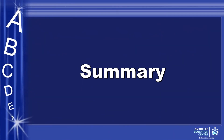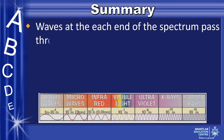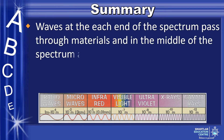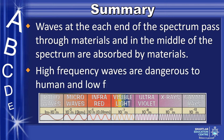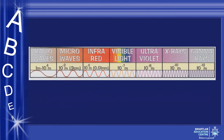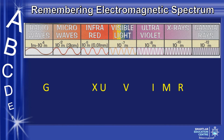Finally, summary. Waves at each end of the spectrum pass through materials, and those in the middle of the spectrum are absorbed by materials. High-frequency waves are dangerous to humans, and low-frequency waves are not. There is a way to remember the electromagnetic spectrum — take the first letter of each type of EM wave and rearrange them in reverse order: GXUVIMR. The mnemonic is: Generation X used Viagra in my room.